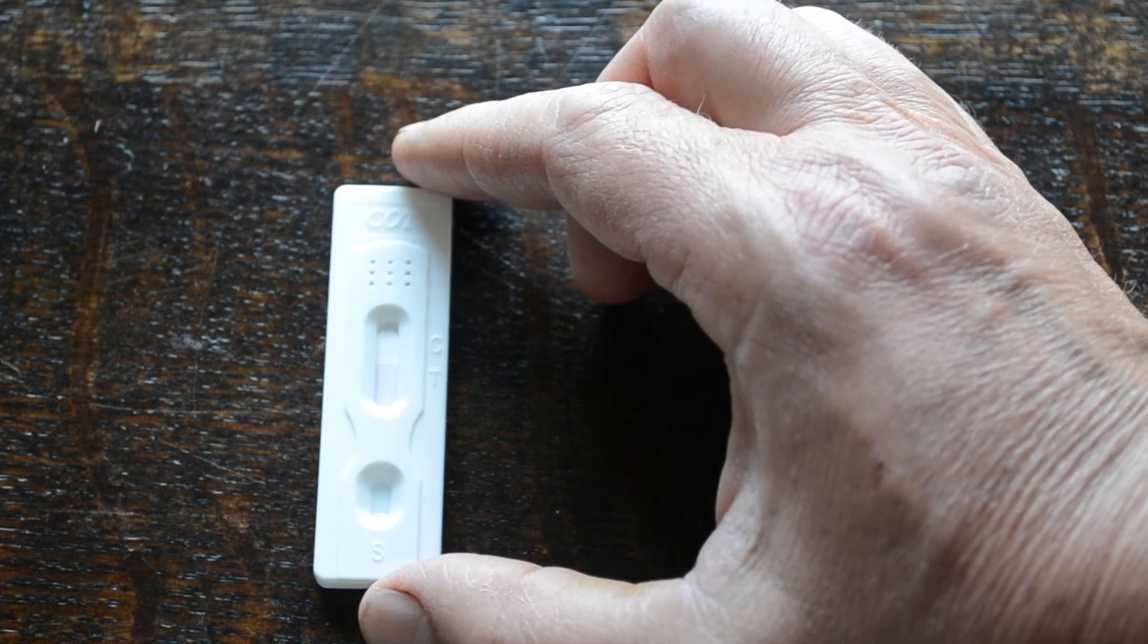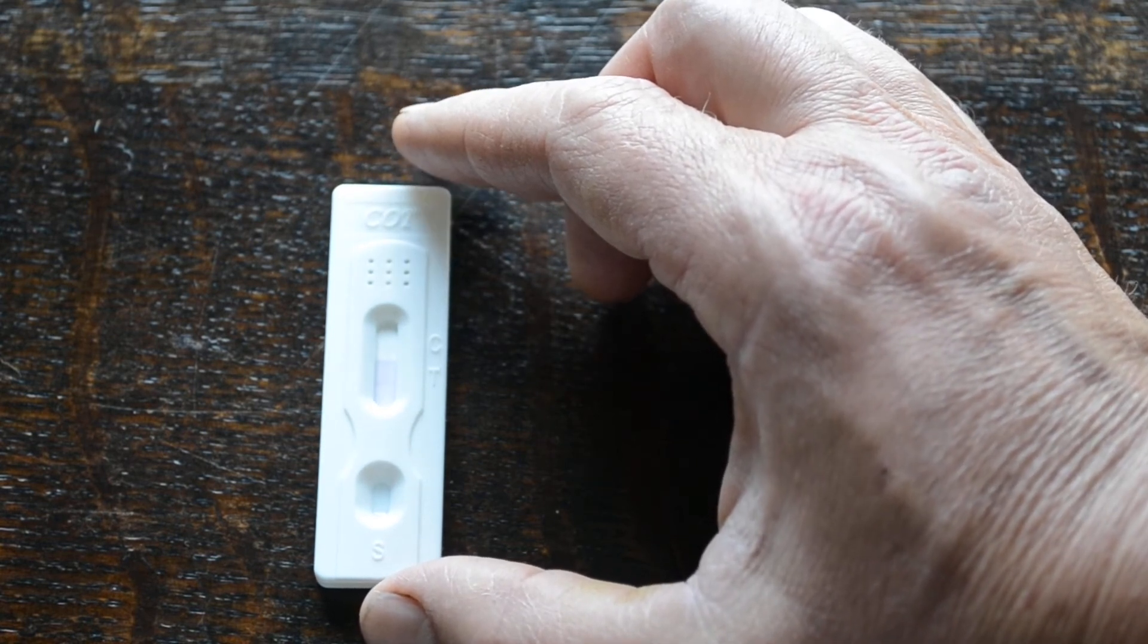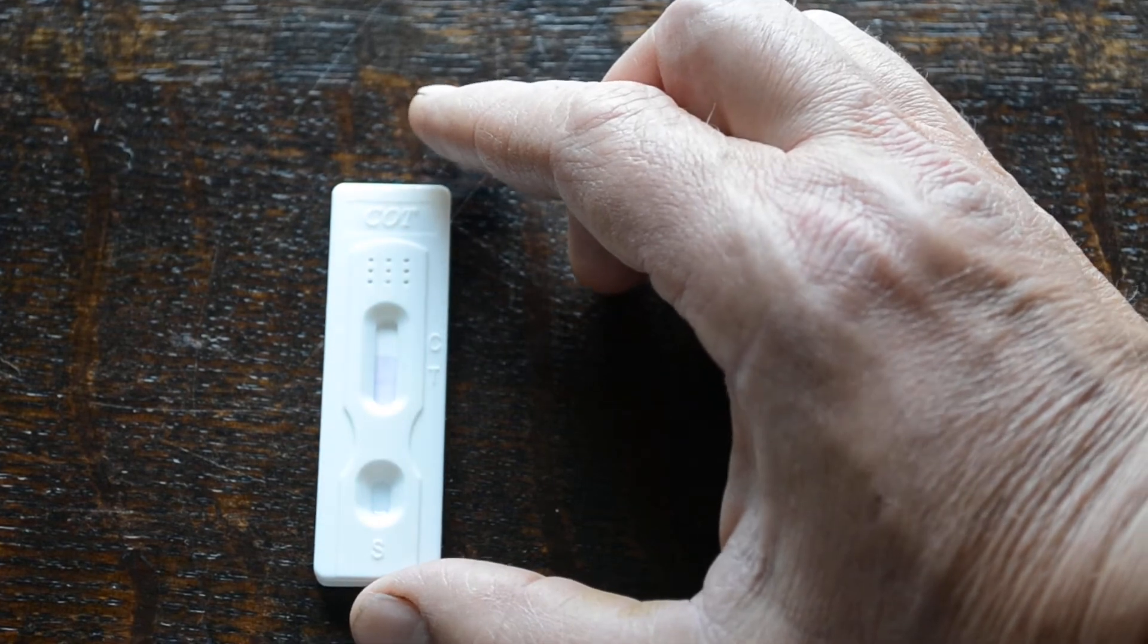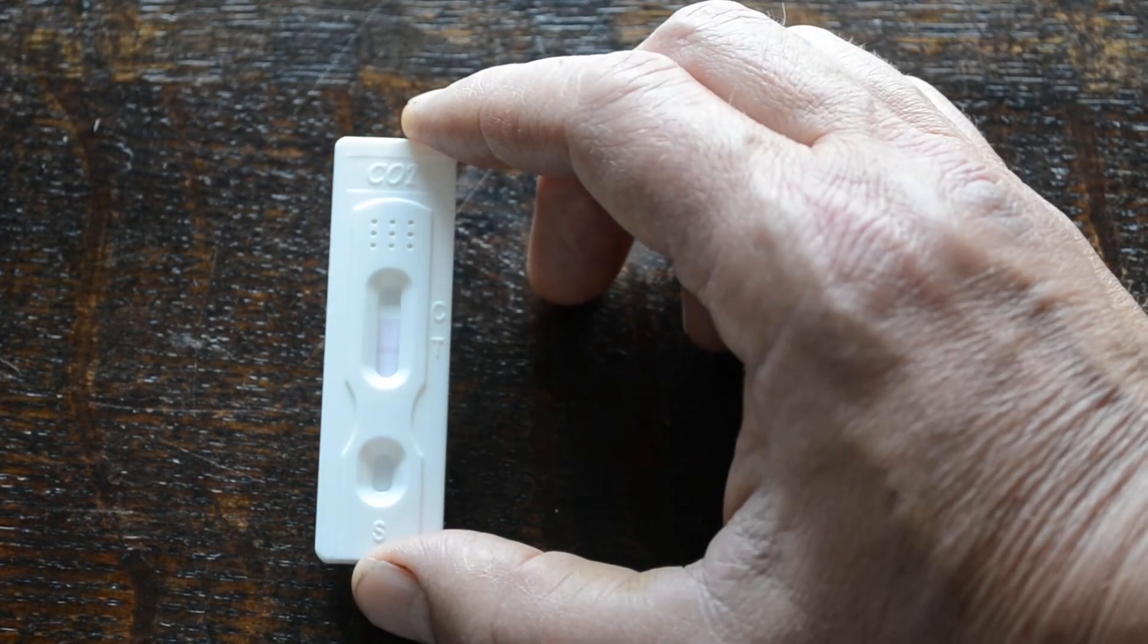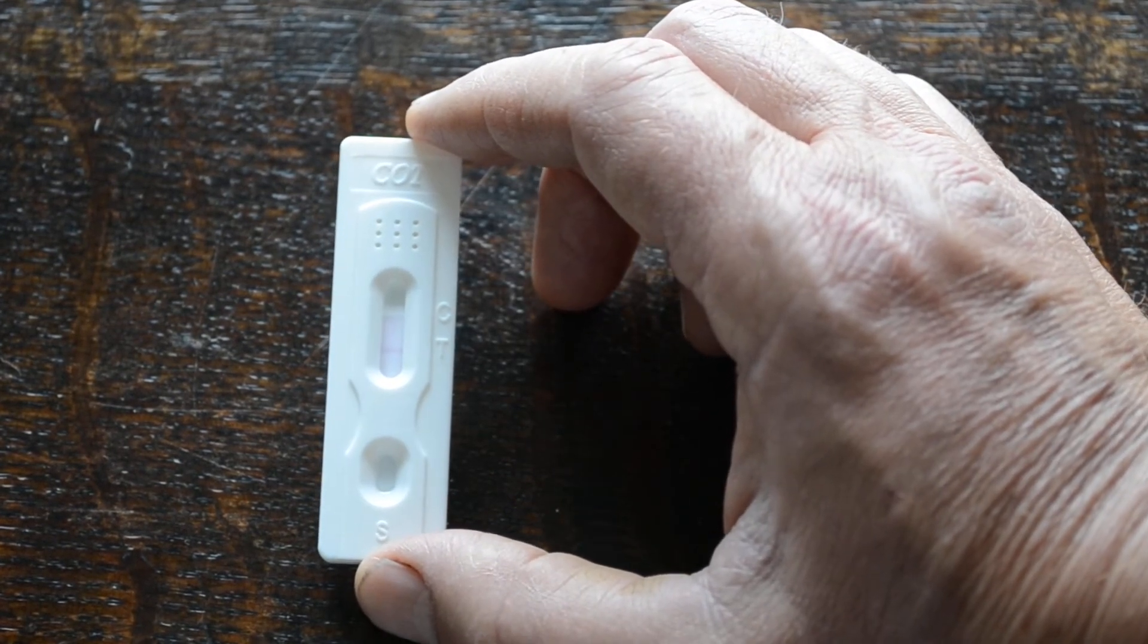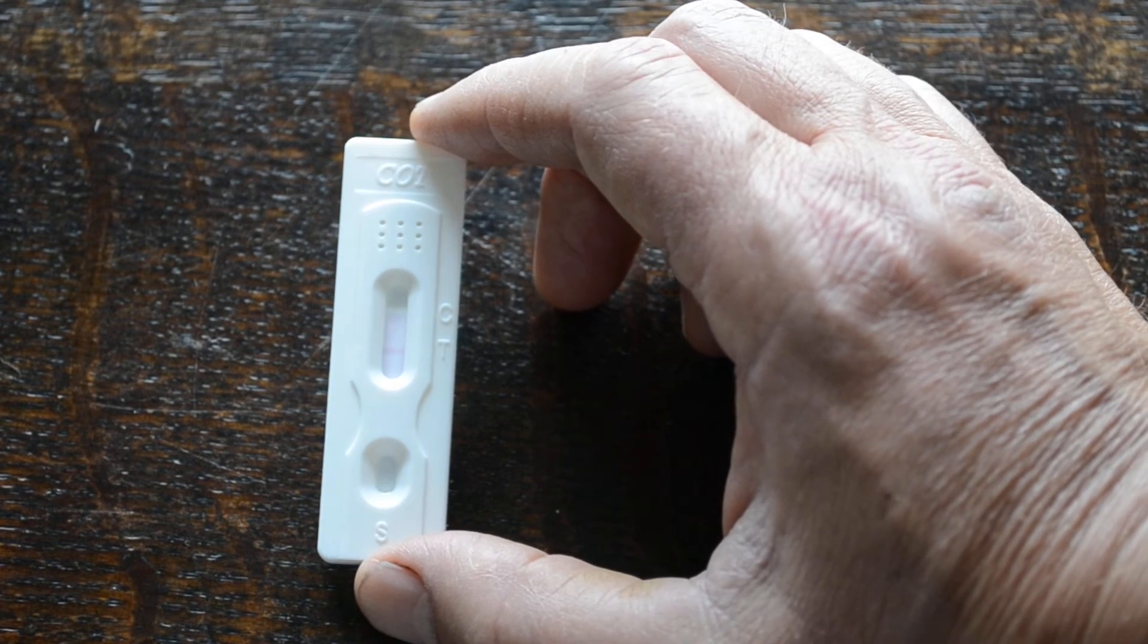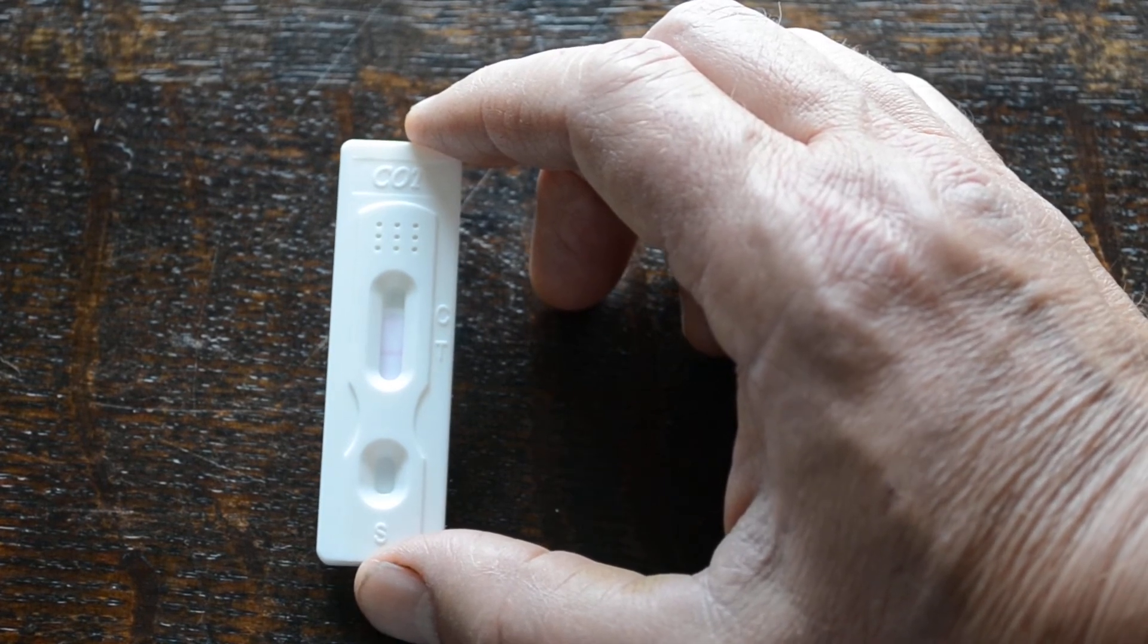You're looking for the presence of a control line and then the presence or absence of a test line. This is negative binding technology, as with all drug screens. So if there is no drug in the sample, the dye binds at the test line and gets a test line and a control line.